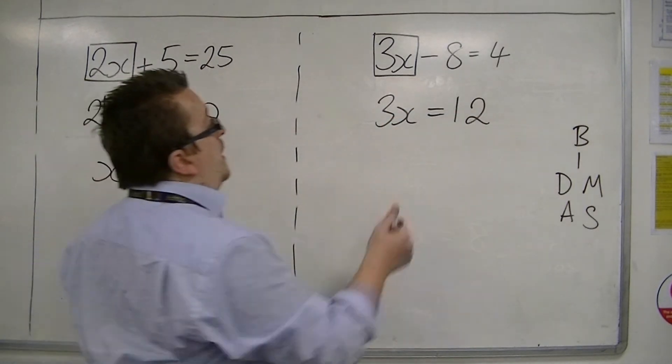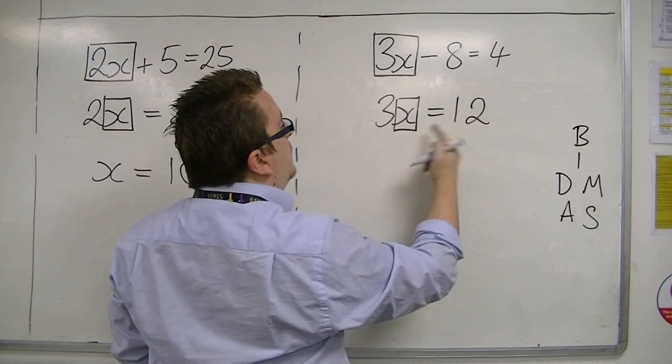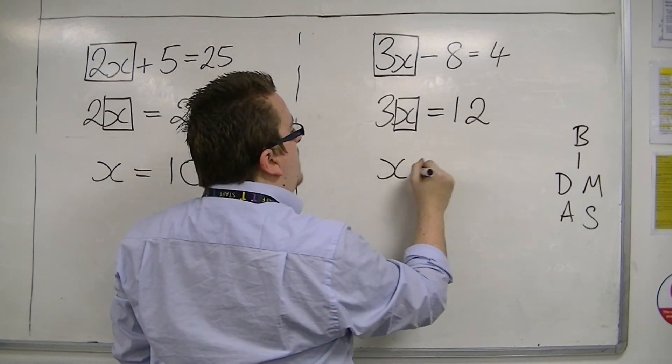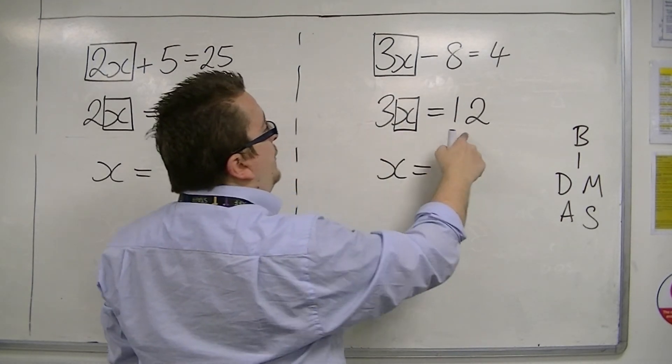So 3x is 12. So 3 lots of something is 12. So the something must be 4. 3 fours are 12.